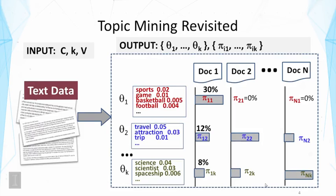To talk about generative models for text clustering, it's useful to revisit the topic mining problem using topic models, because the two problems are very similar. As seen earlier in the lecture on topic models, we have input of text collection C, number of topics K, and vocabulary V. We hope to generate as output a set of topics denoted by theta_i's — each is a word distribution — and pi_ij's, which are the probabilities that each document covers each topic — the topic coverage.